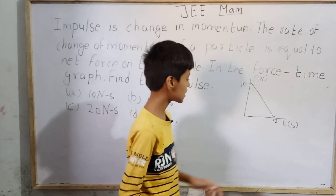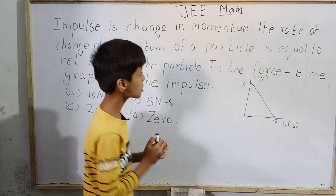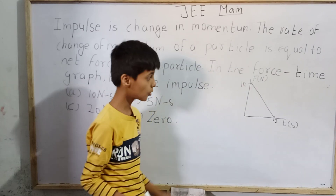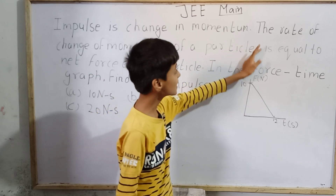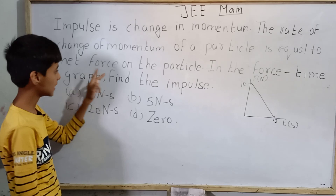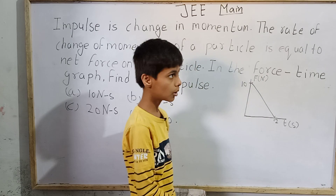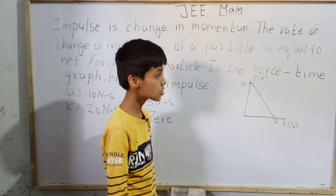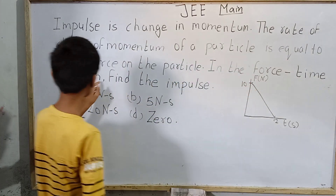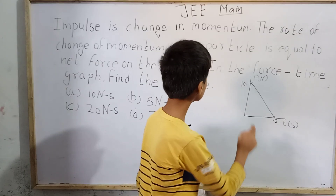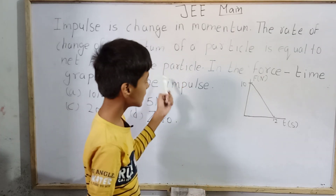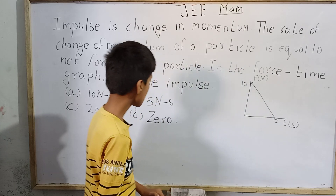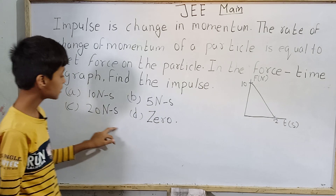This is the type of question where a graph is also given. Impulse is the change in momentum — whenever there is a change in momentum, that change is called impulse. The rate of change of momentum of a particle is equal to the net force on the particle, as described by Newton's second law of motion. In this force-time graph, we have to find the impulse. The options are: A) 10 newton-second, B) 5 newton-second, C) 20 newton-second, D) 0.